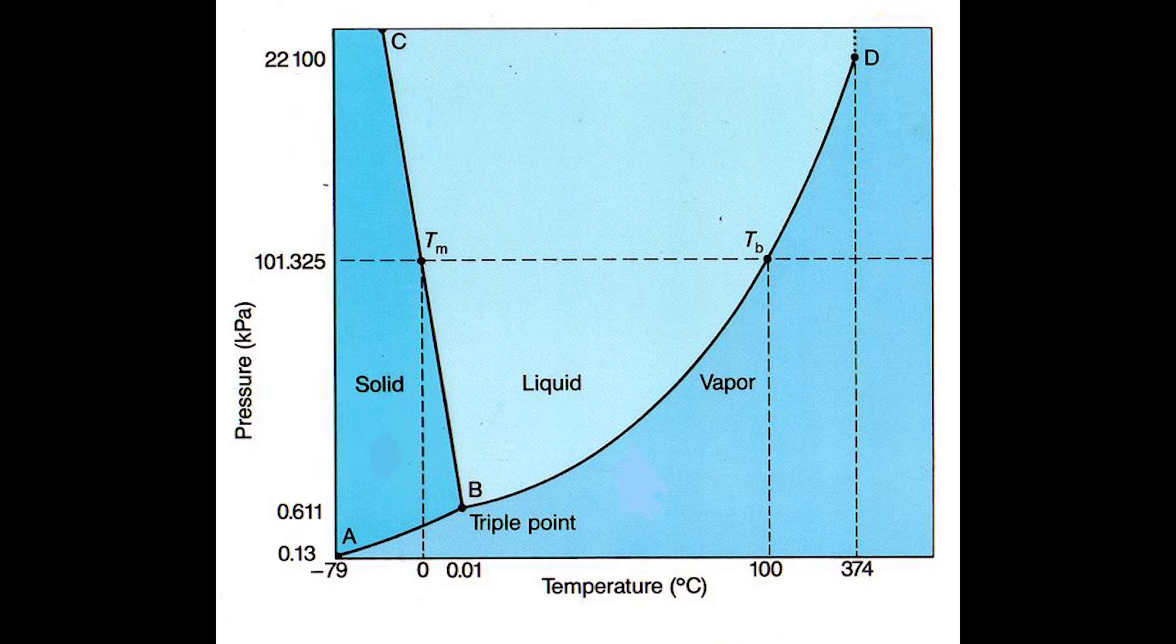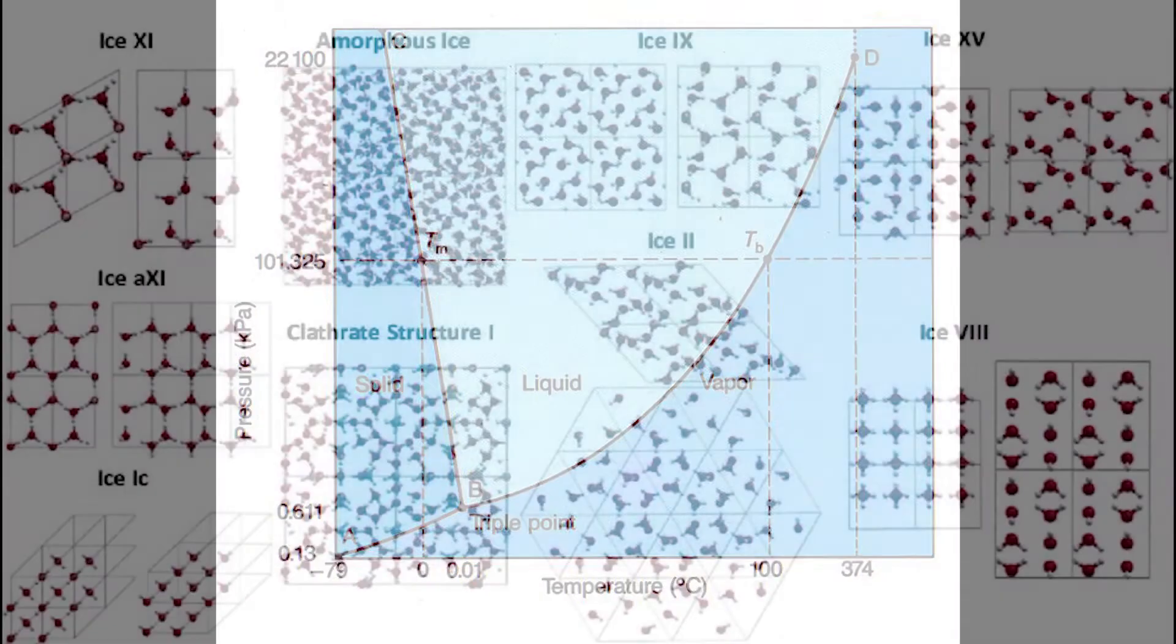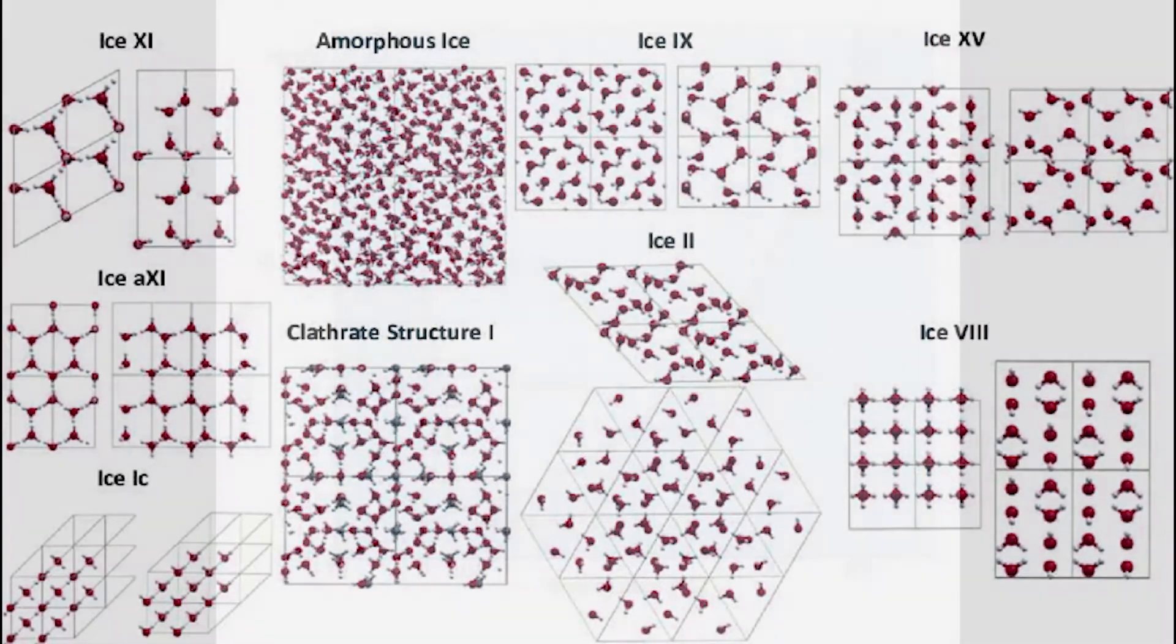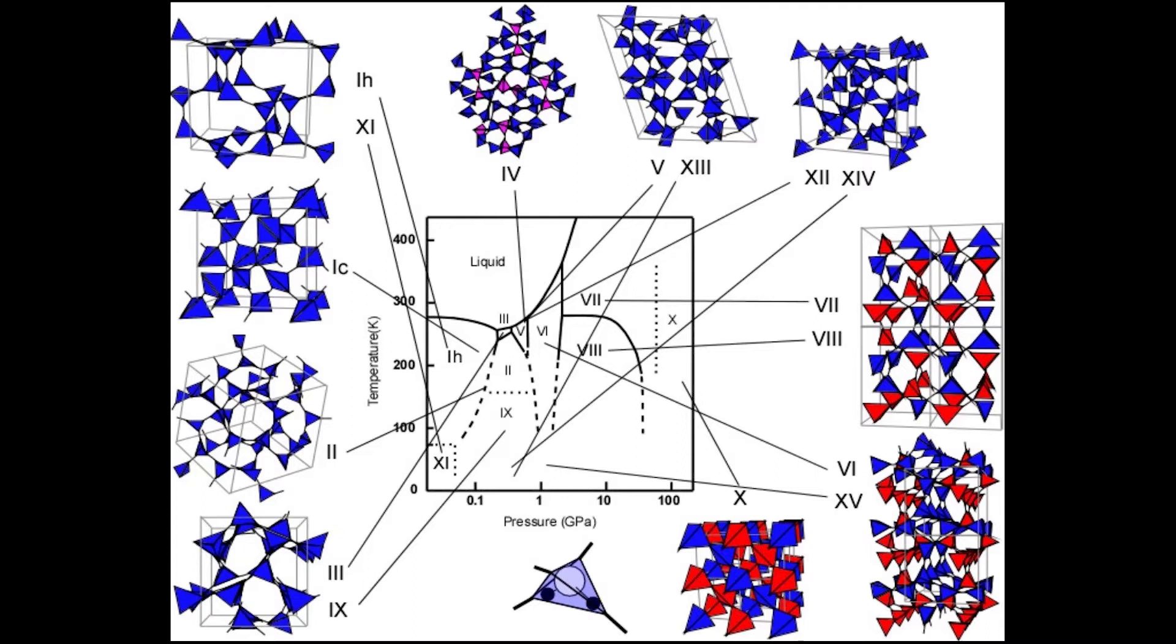In the solid state, subforms called polymorphs exist at different pressures and temperatures. For instance, 18 crystalline phases of water ice have been found so far. Now, by comparing the conditions of a planet to the data obtained by material scientists, it is possible to deduce the phase of a material on that planet.